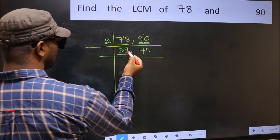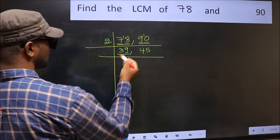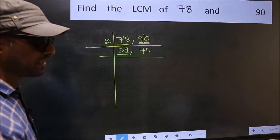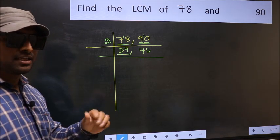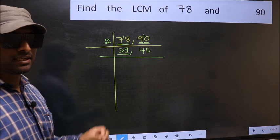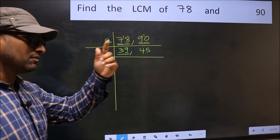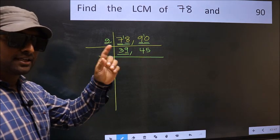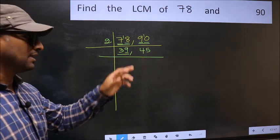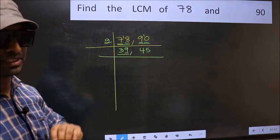Now here 39. Last digit 9, not even, so not divisible by 2. Next prime number is 3. To check divisibility by 3, add the digits: 3 plus 9. We get 12, and 12 is divisible by 3. So this number is also divisible by 3.